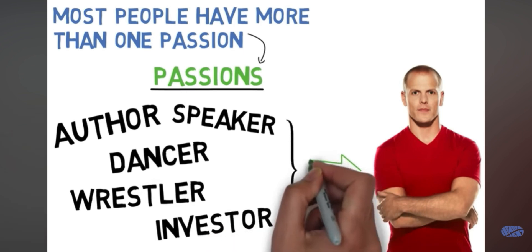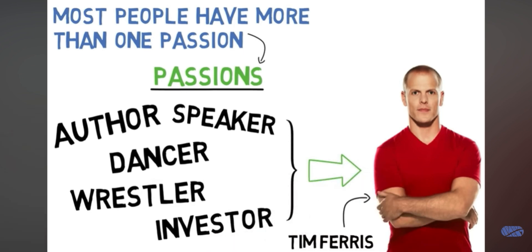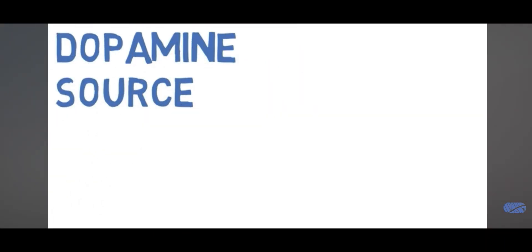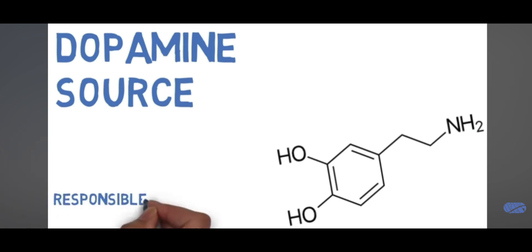There's only two things you need to do in order for you to discover one of your passions. The first is that you must change where you get your dopamine from. Dopamine is the chemical that is released by our brain that motivates us to do things.